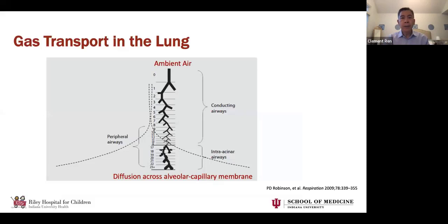If you follow a single airway all the way down from the conducting airways down to the peripheral airways, and finally into the intraacinous airways where gas exchange occurs, you have to find some way to differentiate the ambient air that we're breathing from the air that's inside our lungs. That's really the basis of multiple breath washout.